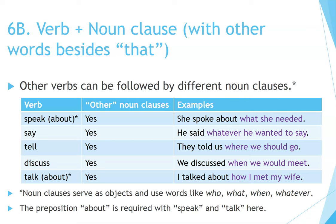Section 6b: Verb plus noun clause with other words besides 'that.' Speak about — yes: She spoke about what she needed. Say — yes: He said whatever he wanted to say. Tell — yes: They told us where we should go. Discuss — yes: We discussed when we would meet. Talk about — yes: I talked about how I met my wife. Noun clauses serve as objects and use words like who, what, when, whatever. The preposition 'about' is required with speak and talk here.